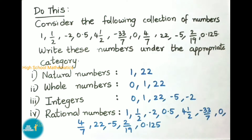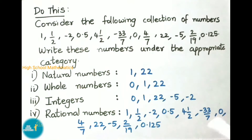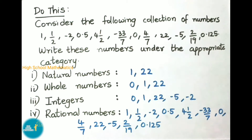Next, 4½ is a mixed number. It can also be written as a rational number: 2 times 4 is 8, plus 1 is 9, so it becomes 9/2 — a rational number. -33/7 is a rational number. 0 can be written as 0/1 or 0/2 — 0 divided by any number is 0, so it is a rational number. 4/7 and 2/19 are rational numbers. 22 can be written as 22/1. -5 can be written as -5/1. And 0.125 can be written as 125/1000.